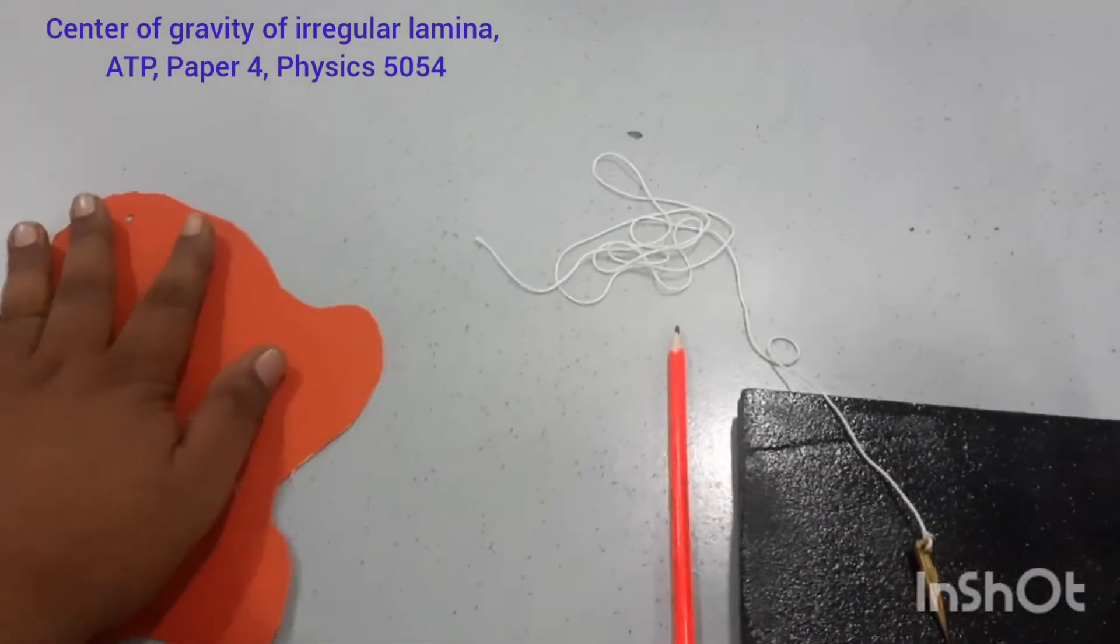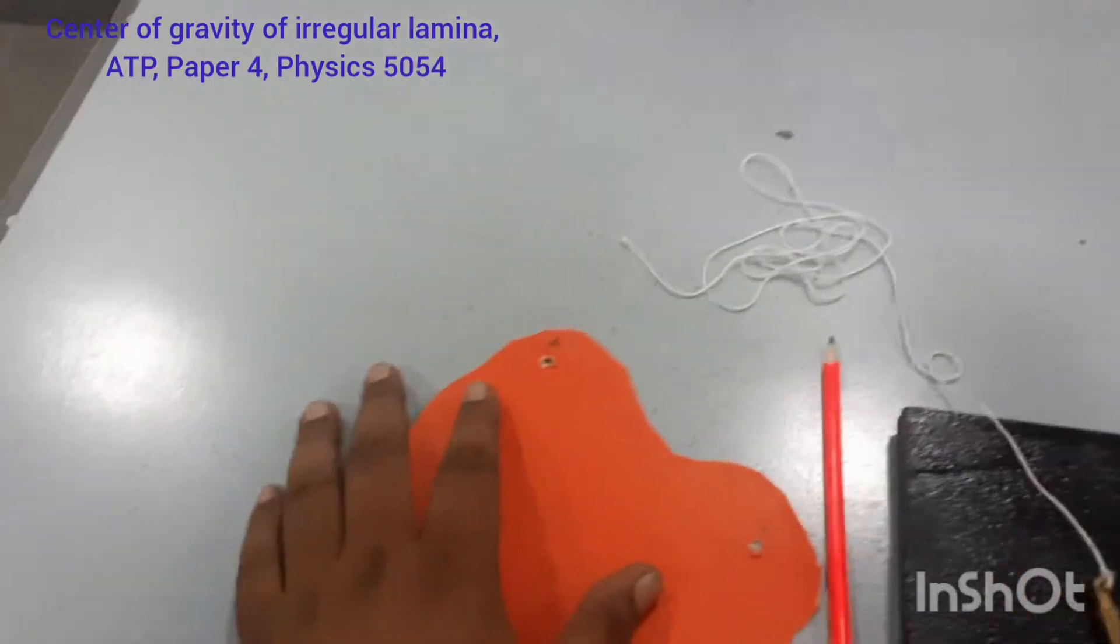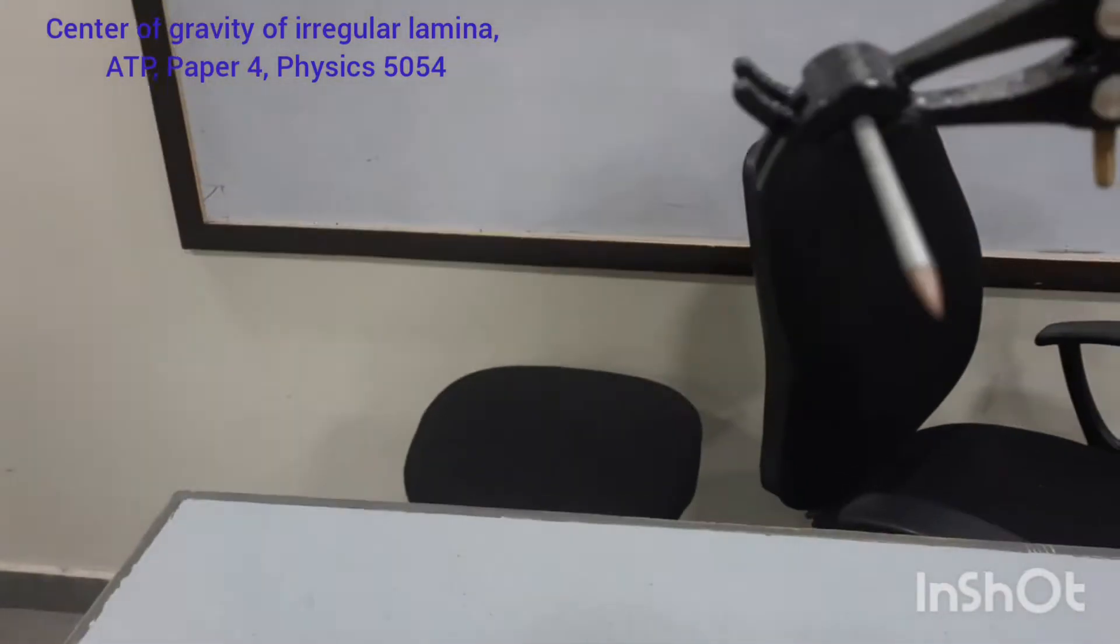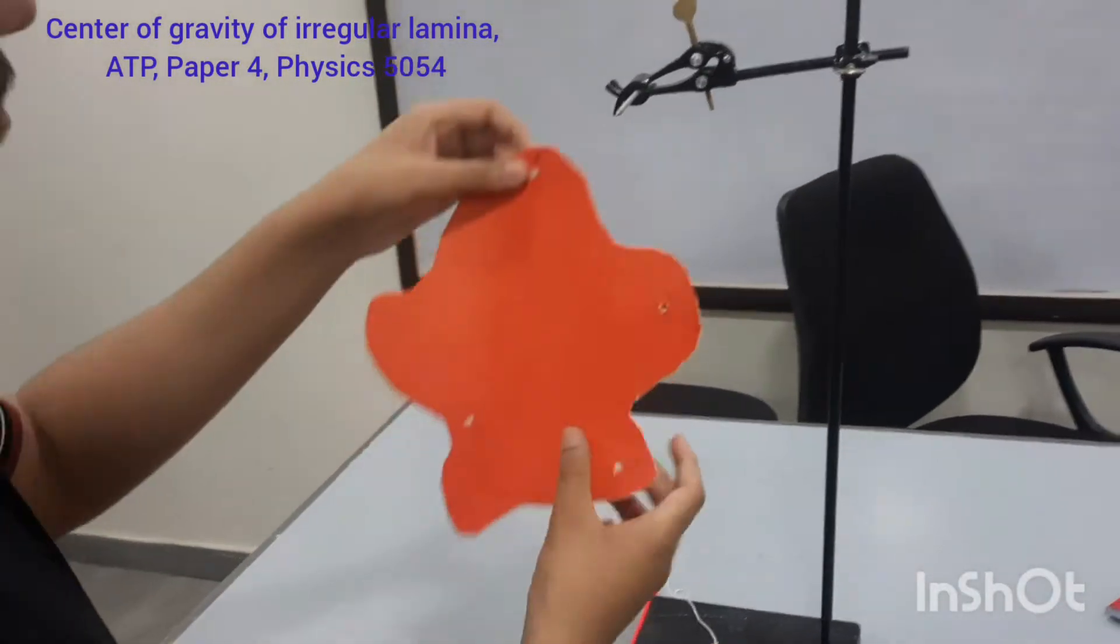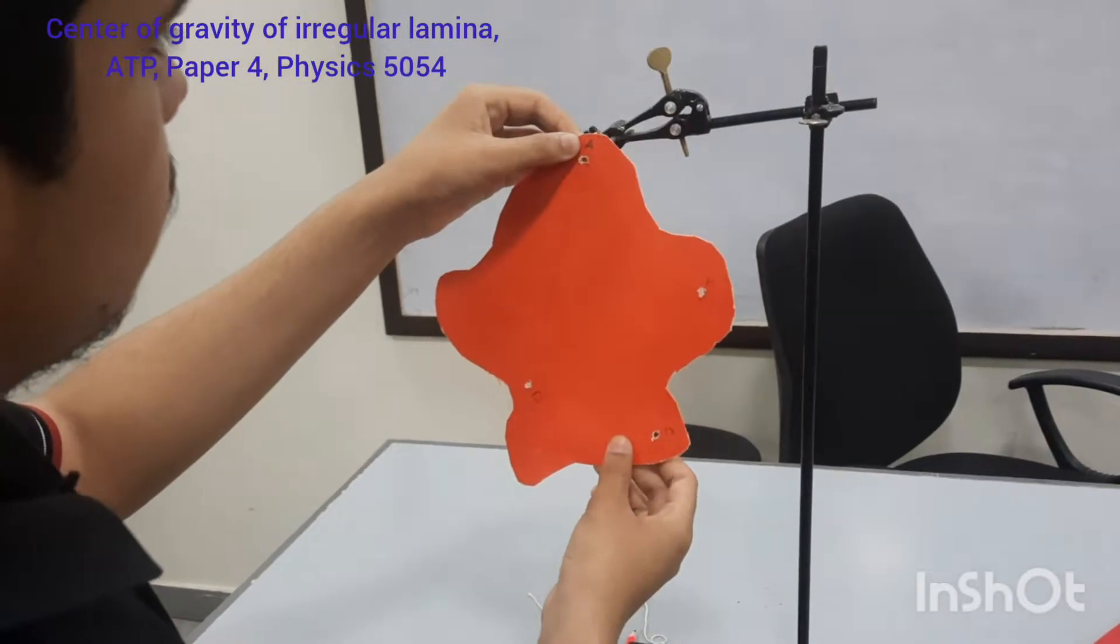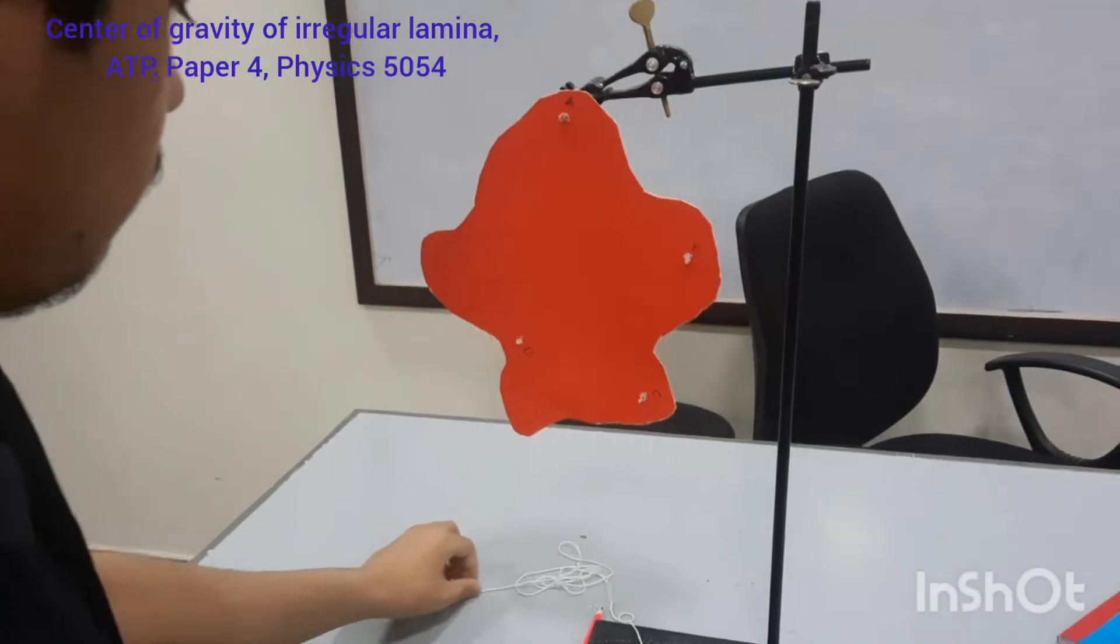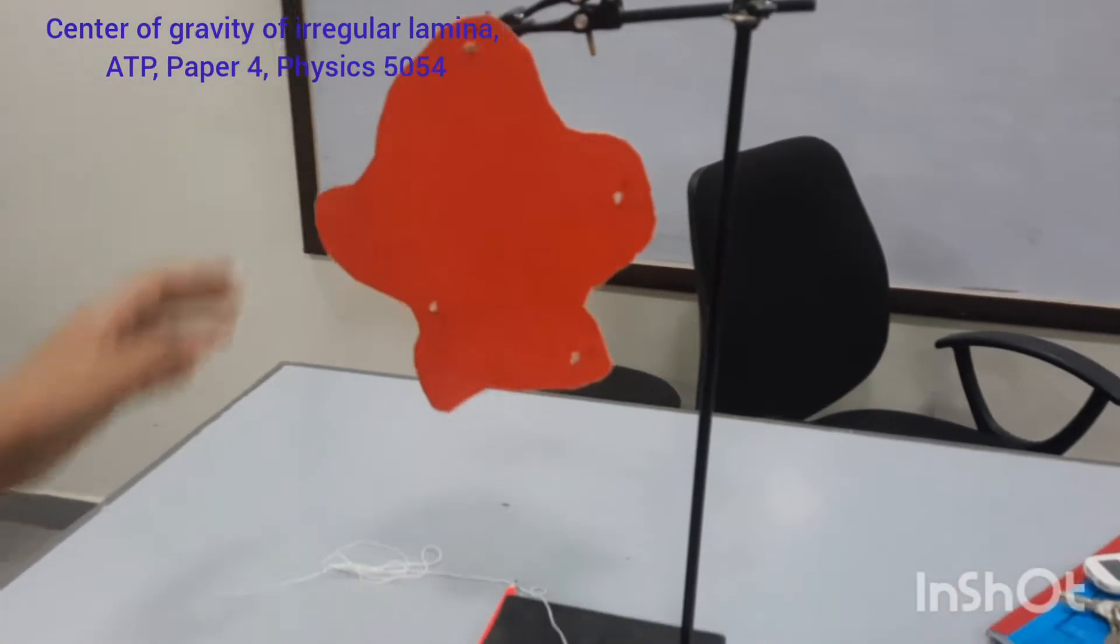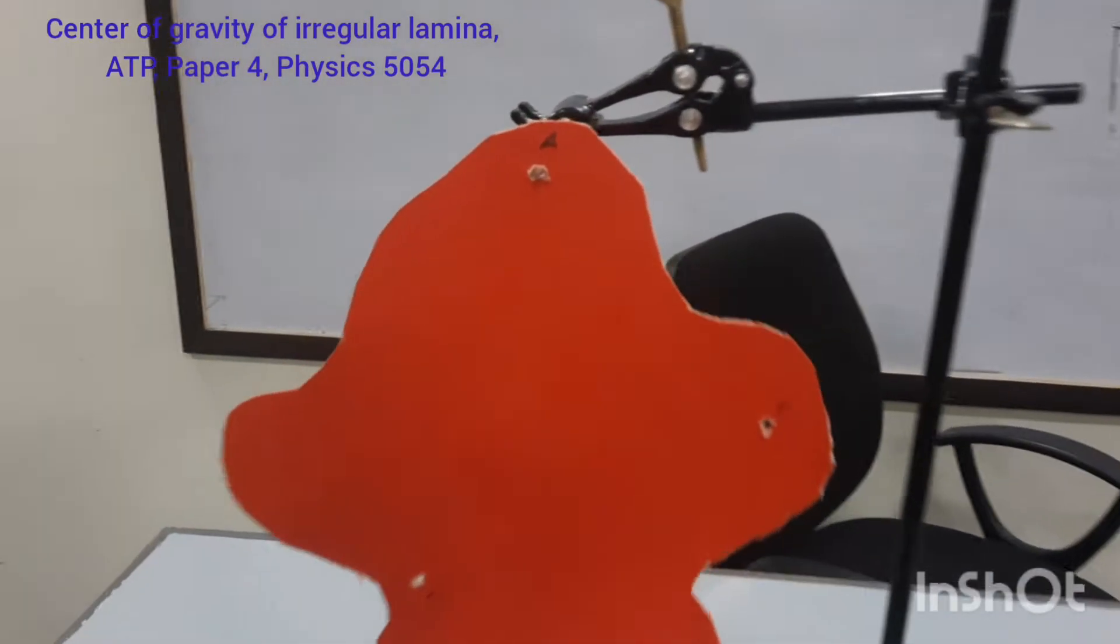So what I will do, with me I have my students. So we will hang this lamina from the hole A on this pin. So please hang this lamina by this pin and the hole should be large enough and there should be very negligible friction between the hole and that pin.